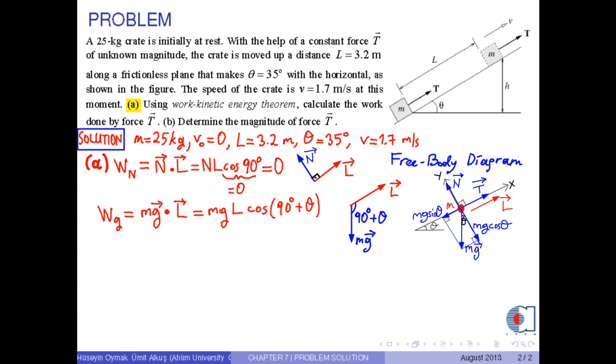With the help of the trigonometric identities, we have cosine 90 degrees plus theta as negative sine theta. Therefore, we obtain negative M times G times L times sine theta.